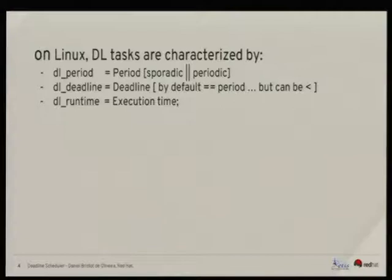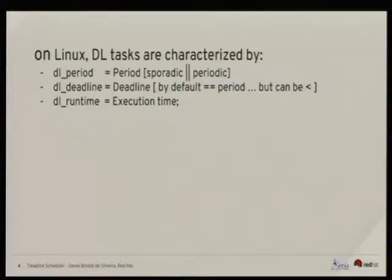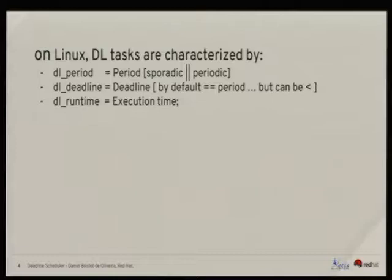On Linux, to set a task to run in the deadline scheduler, we have three parameters. One is the period, which is the minimal inter-arrival time of each job — the task will be awakened every 100 milliseconds or more. We have the runtime, which is the amount of CPU time the task needs to accomplish its job. And the deadline, which can equal the period by default or be shorter than the period, which is called a constrained deadline task.